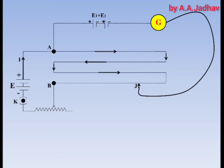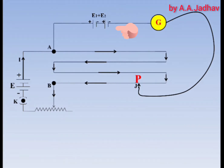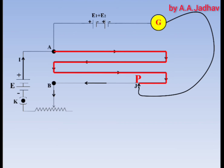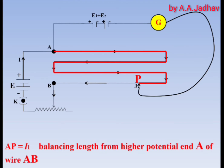By touching the jockey at different points on the potentiometer wire, null point P is obtained for which the galvanometer shows null deflection. This means the potential at point P is equal to the potential at the negative terminal of cell E2, so no current is drawn from the cell combination — it acts like an open circuit. The length of wire between A and P is called the balancing length for this sum combination. Let AP equal to L1 be the balancing length from the higher potential end A of wire AB.